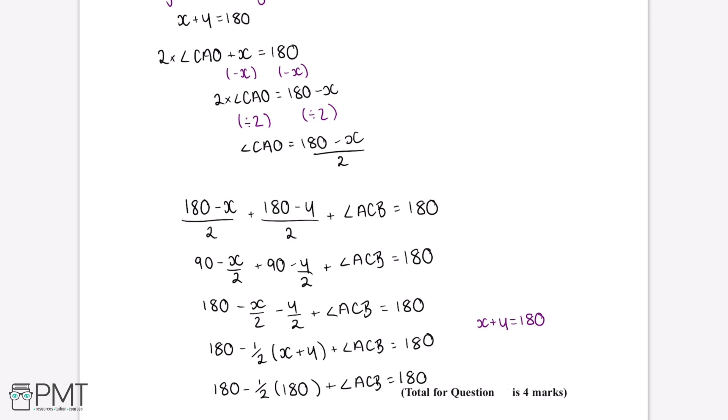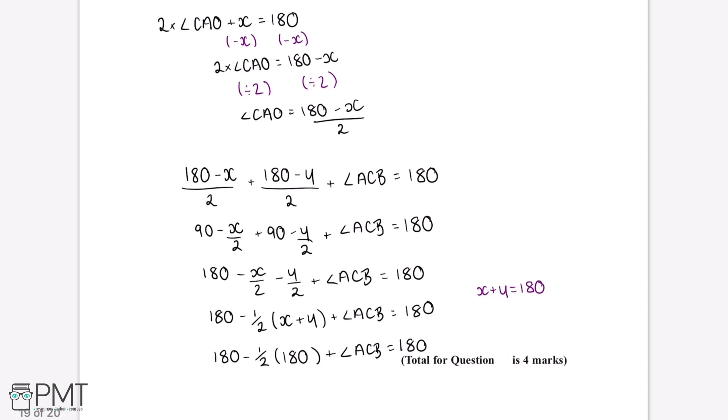Next we can expand out these brackets and this gives us 180 minus 90 plus the angle ACB is equal to 180. If we put all of the numerical terms onto one side of this equation, this tells us that angle ACB is equal to 90 degrees.